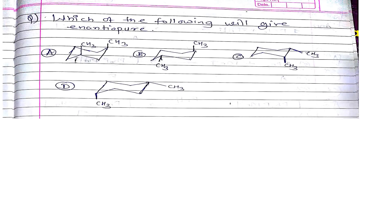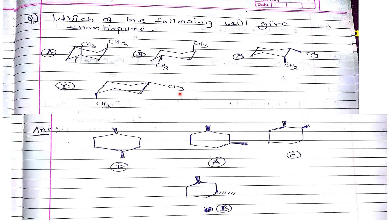Moving on to the next question. The next question is asking which of the following will give the enantiomer. They are giving some conformations of cyclohexane, disubstituted dimethyl cyclohexane. There are two derivatives.